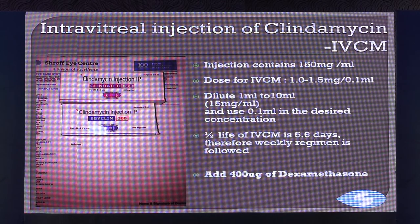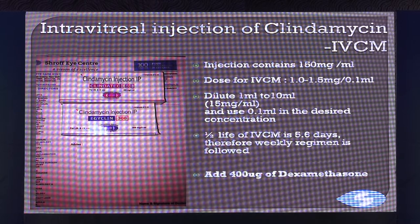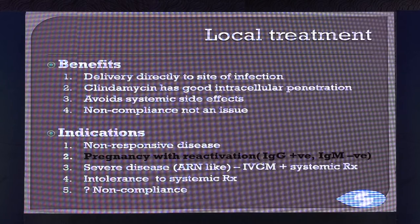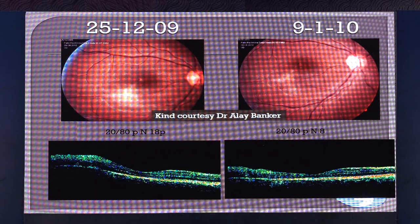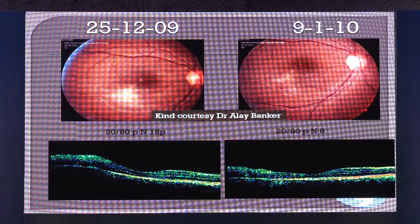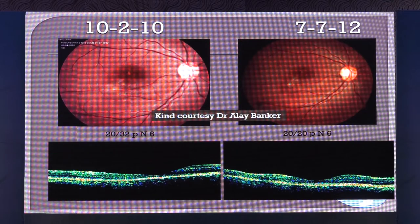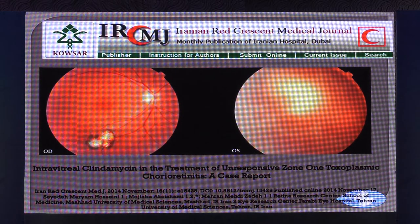Another option is intravitreal injection of clindamycin, which is available in two doses. Since the half-life is five days, you can give it in combination with dexamethasone. An important note from a clinical case: in a pregnant lady, make sure the patient is IgM negative and IgG positive so the pregnancy can continue — an IgM positive result means a fresh infection.